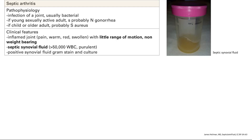If you have a young, sexually active adult, the bacteria is usually gonorrhea. That's sexually transmitted — it goes through your blood and hits your joints. If it's a child or an older adult, it's probably Staph aureus. For test purposes, that's pretty much all you need to know. Sexually active: gonorrhea. Not sexually active: Staph aureus.